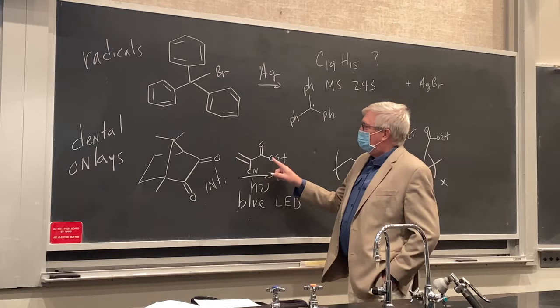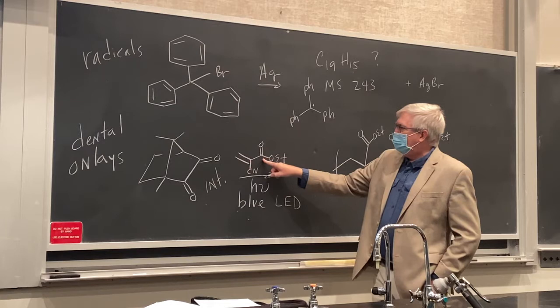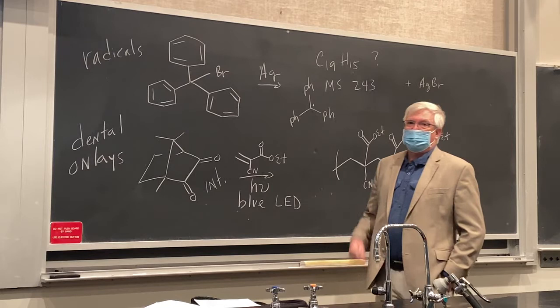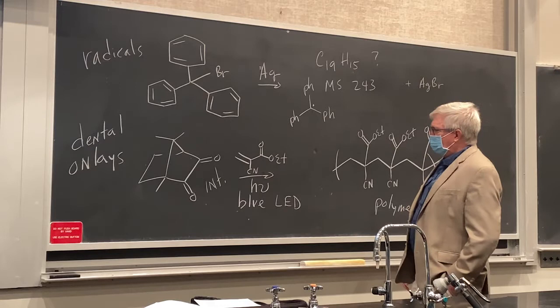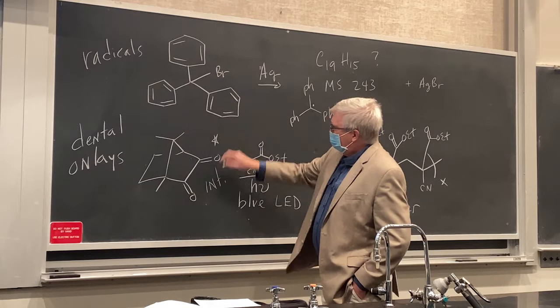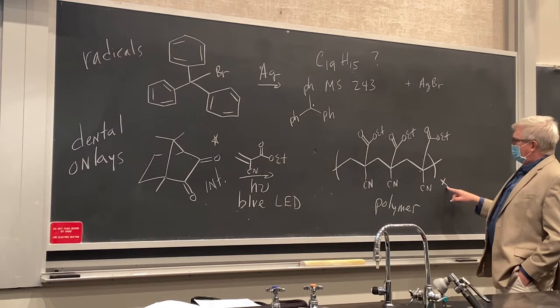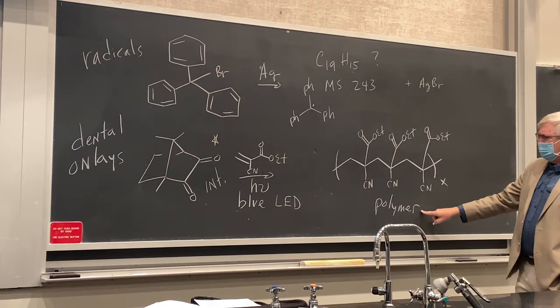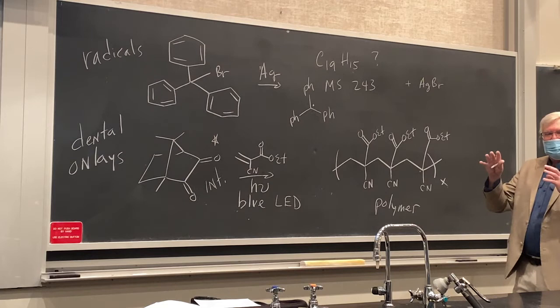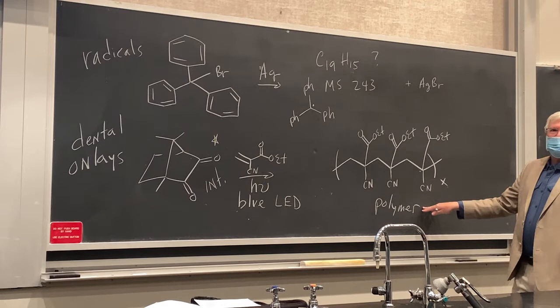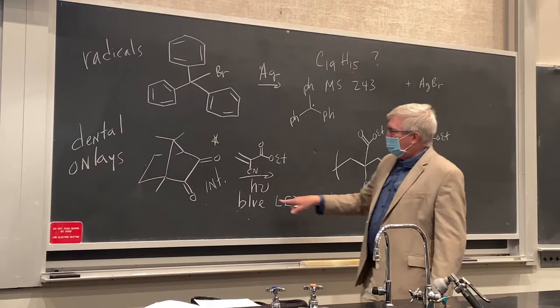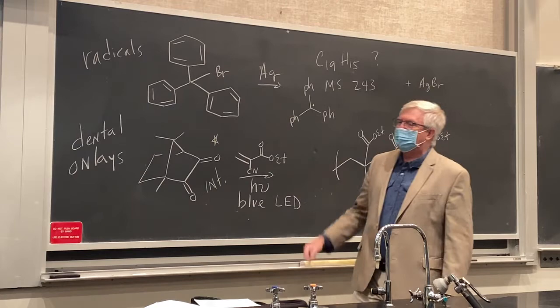It's camphor ketone, which is the initiator for a radical reaction with this cyanoacrylate material — a cyanide, an alkene, and an ester. This is the monomer which becomes a polymer. The LED light excites the ketone to the excited state, forming the diradical initiator, which adds to the alkene and then propagates — putting together a bunch of cyanoacrylates to make a polymer hundreds or thousands of units long. It becomes a solid material that intercalates into the micro holes in the tooth surface, locking it in place. The blue LED light is part of the initiation.